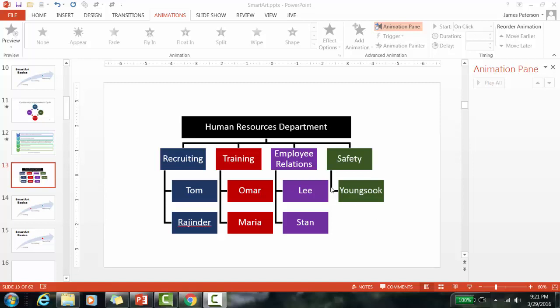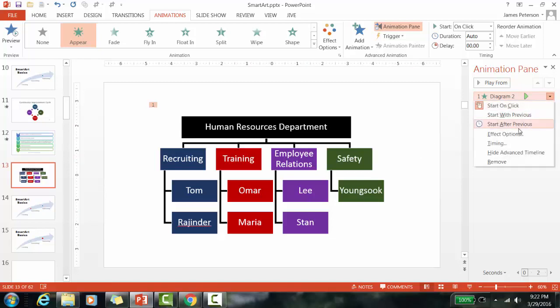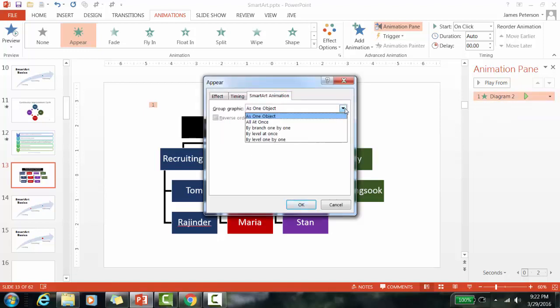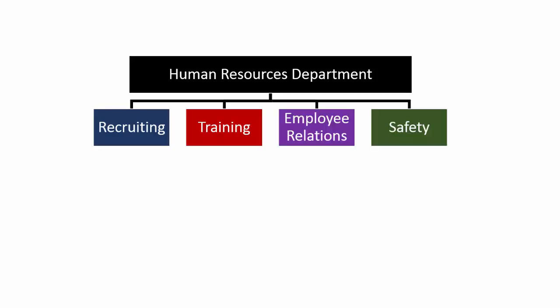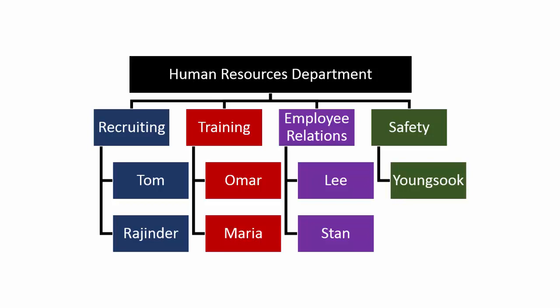For the last example, I click the SmartArt, click Add Animation, then go to Effect Options > SmartArt Animation. I need to think about my script: do I tell the story by level or by branch? I'll choose 'By Level One by One.' Now I can tell the story: let me tell you about the Human Resources department — we have four teams: Recruiting, Training, Employee Relations, and Safety — and on our Recruiting team we have Tom and Rajinder, and so on. When creating SmartArt and animations, your graphics and animations should match your script.